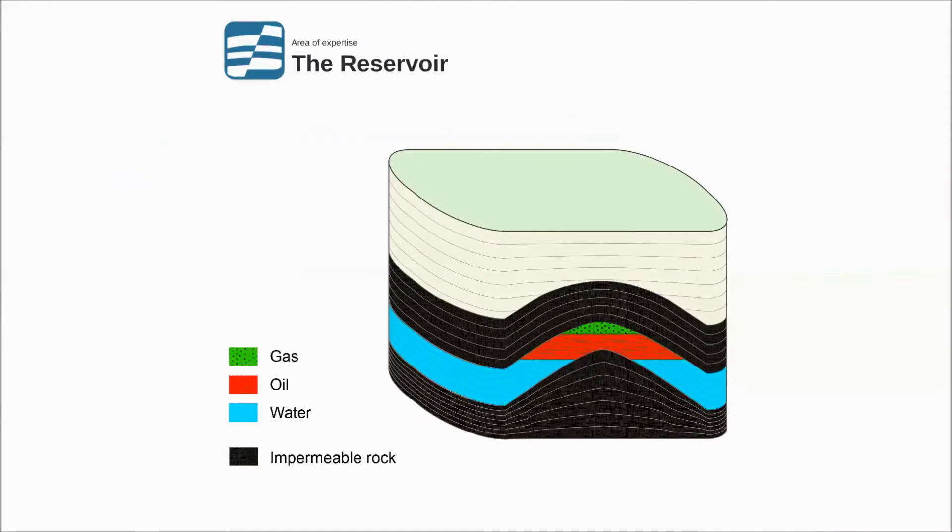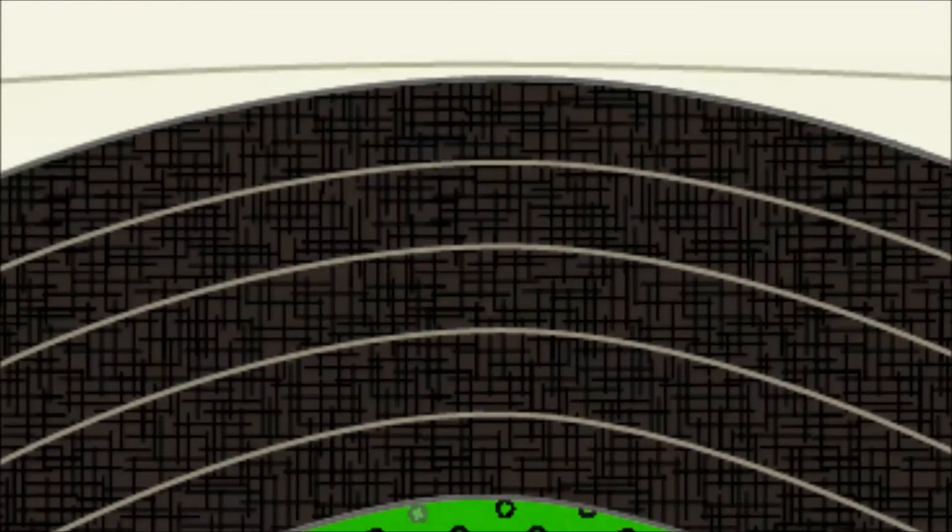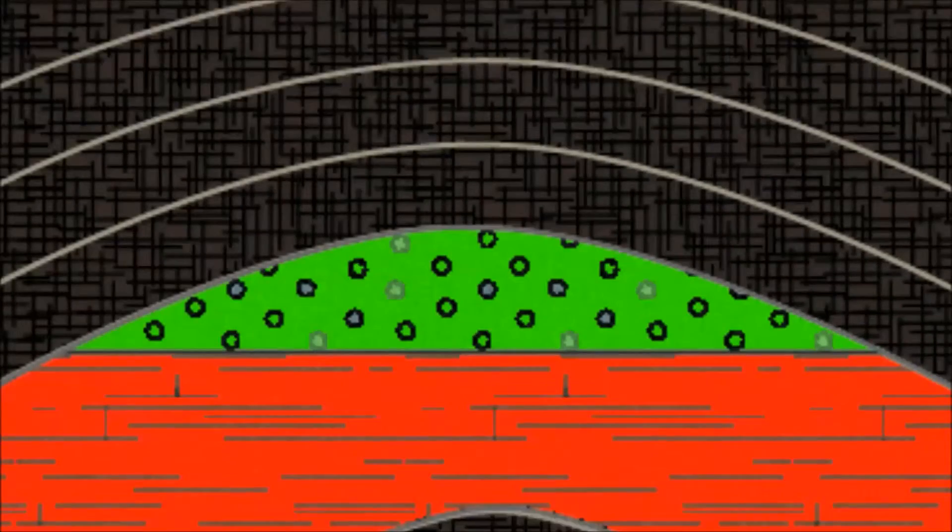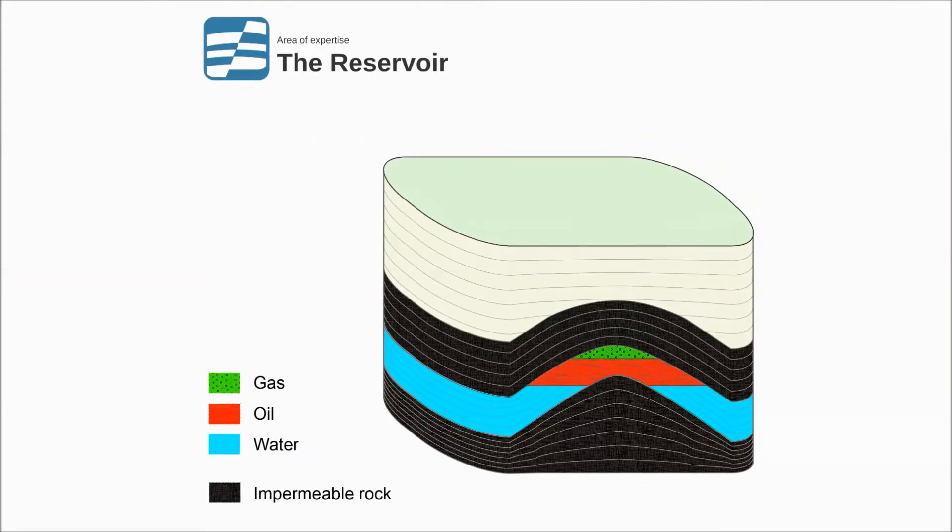Here it all starts, the reservoir. Buried deep under the earth's surface, trapped under a layer of impermeable rock, we find porous rock filled with a mixture of oil and gas, usually floating on water, which is a remnant of the sea in which the hydrocarbons were formed from marine lifeforms millions of years ago.